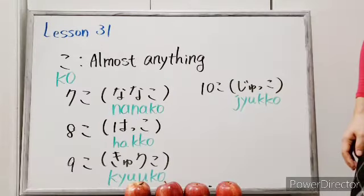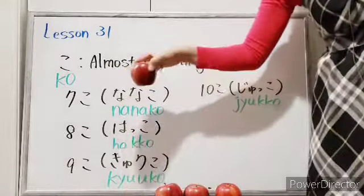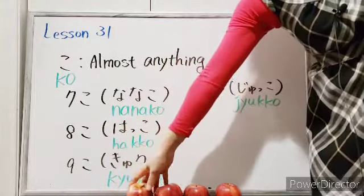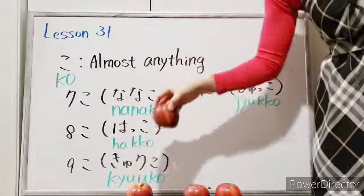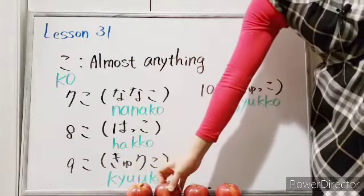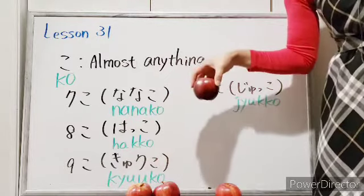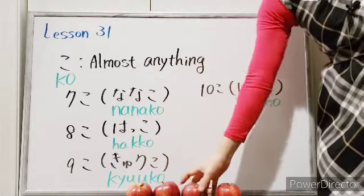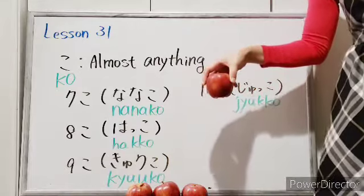Let's count the apples together. Ikko. Niko. Sanko. Yonko.